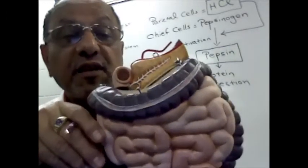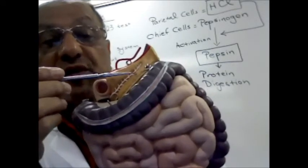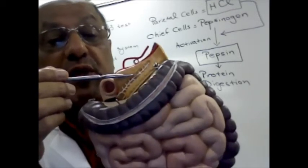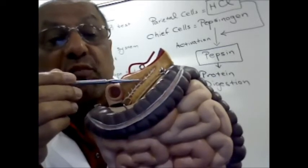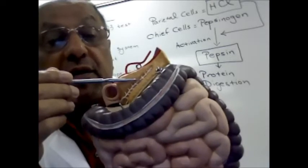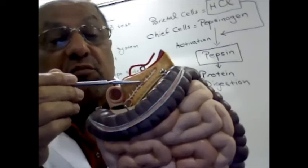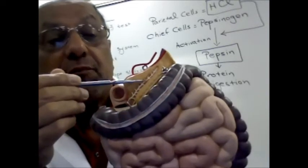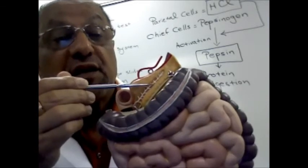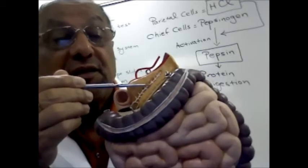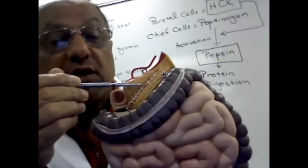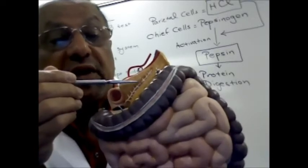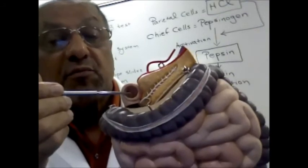One of the accessory organs of the digestive system also shown on this model is the pancreas. The pancreas produces two important products. One product is bicarbonate, which will be used to neutralize the acid coming from the stomach. The other product is a group of enzymes used to digest proteins, lipids, carbohydrates, and nucleic acids. The white structure you see on the pancreas is the pancreatic duct, which carries the pancreatic juice to the duodenum.